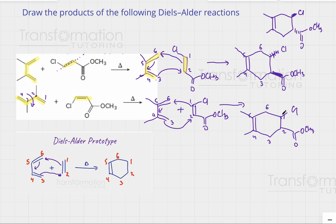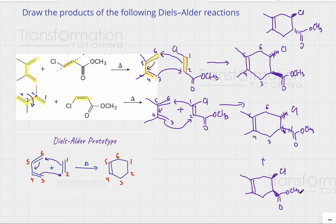To show cis stereochemistry, either we show both substituents on a dash, or we show both on a wedge. Let's go ahead and show both of them on a wedge. These must be the products for my second example.